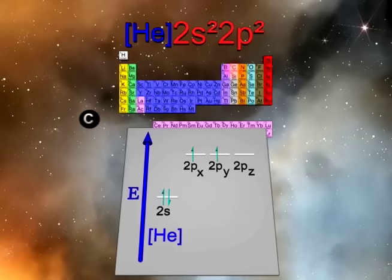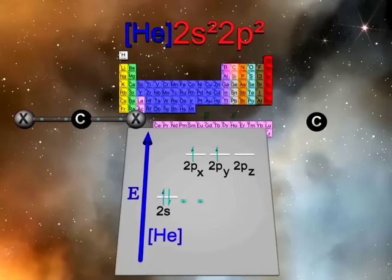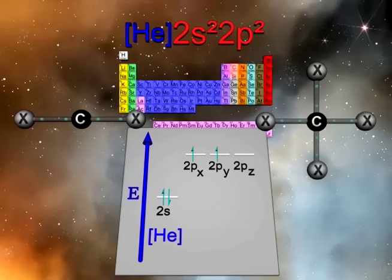It would appear that there are only two unpaired valence electrons capable of forming covalent bonds, one in the 2px and one in the 2py orbital. However, it is well known that carbon forms a total of four covalent bonds to attain full valency. Thus, all four valence electrons must be involved in bonding.